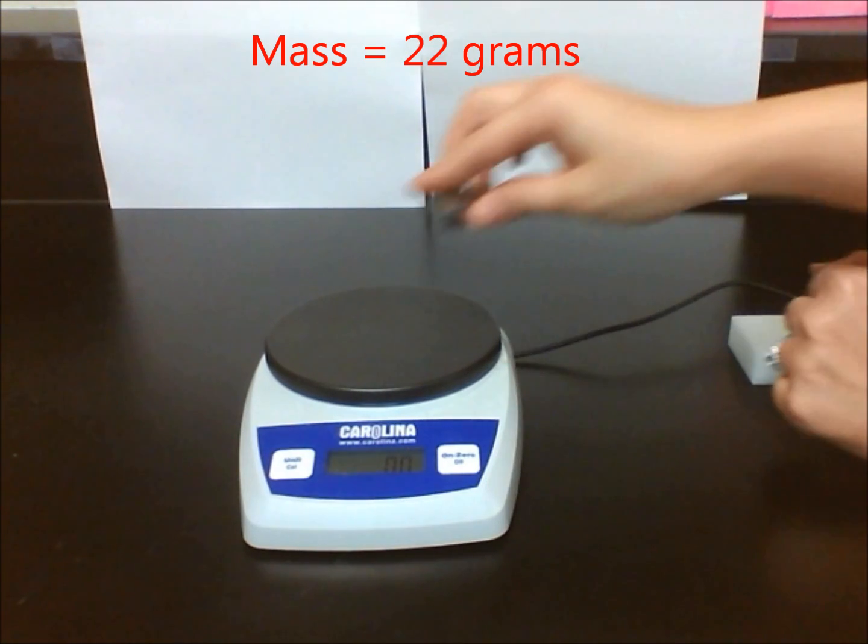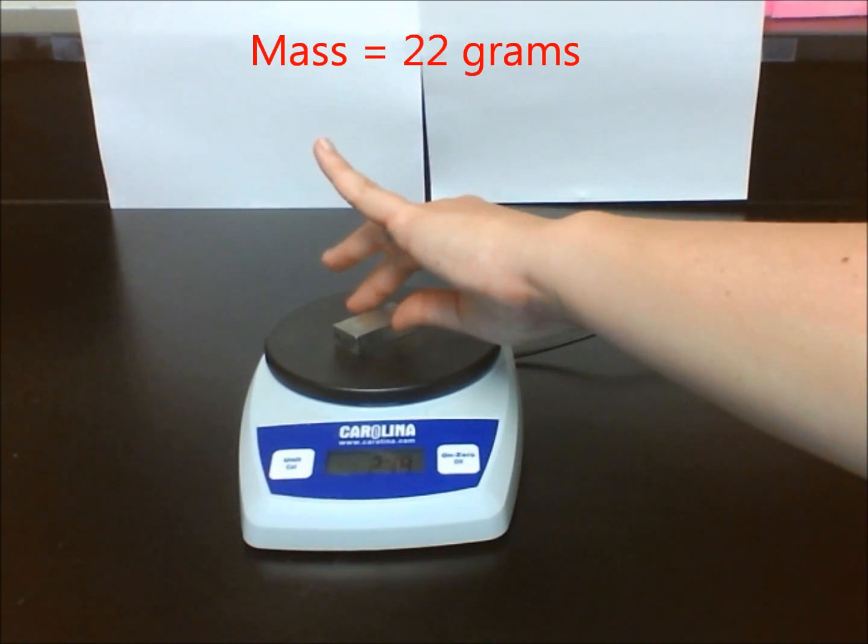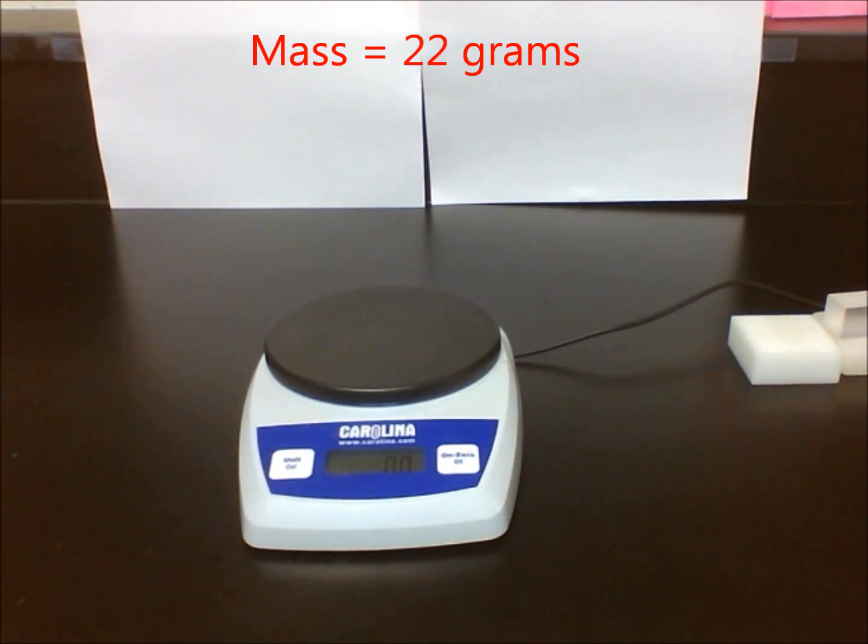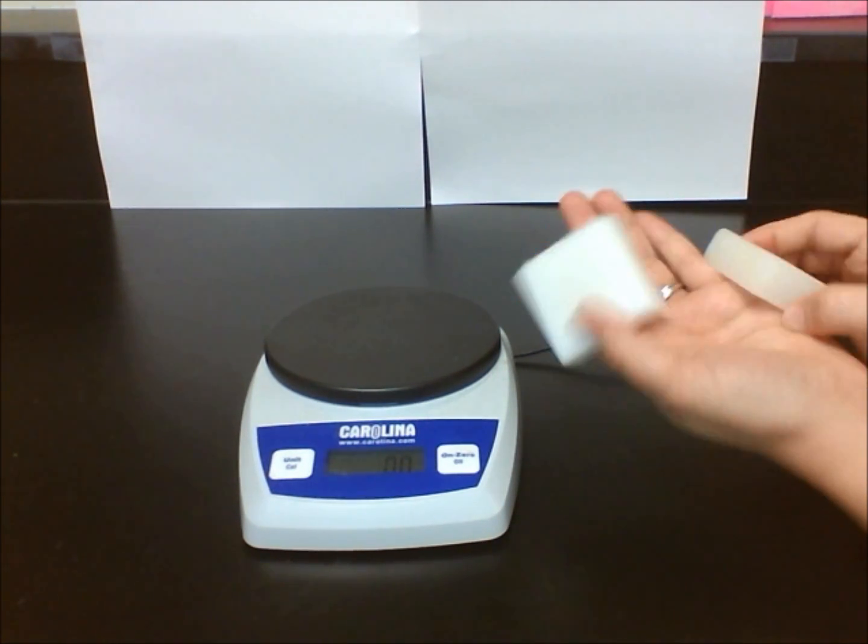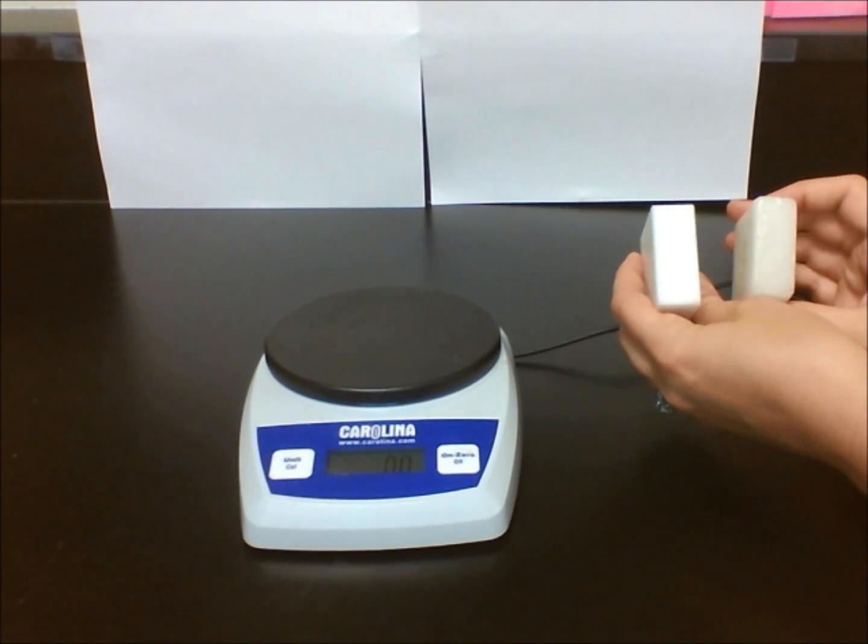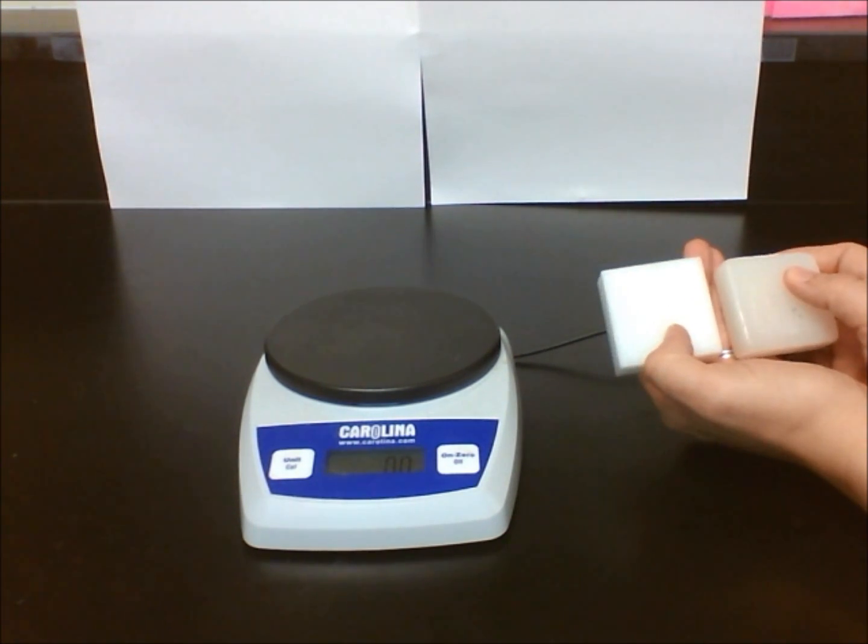As you can see in this lab, the white block and white wax block are almost exactly the same size but have different densities. This is because density is a characteristic property, which means each material has its specific density. Any samples I have of the same plastic should have that same density or very close to it.